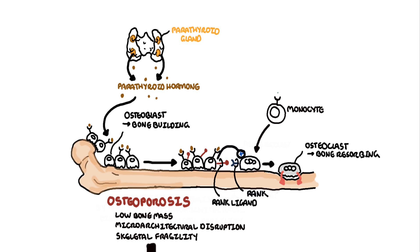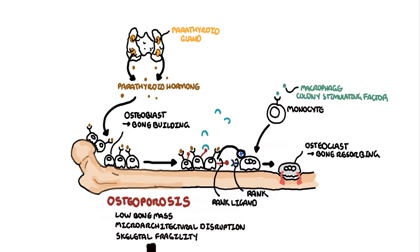Osteoclast formation is regulated primarily by macrophage colony stimulating factor, MCSF, which promotes the differentiation of myeloid progenitors into promonocytes and then osteoclasts. It's also regulated by RANK ligand, which causes the differentiation and fusion of premature osteoclasts into osteoclasts. It's also regulated by a soluble inhibitor, osteoprotegerin, OPG. OPG binds to RANK ligand, inhibiting the interaction between RANK ligand and RANK, and therefore OPG prevents the activation of osteoclasts.